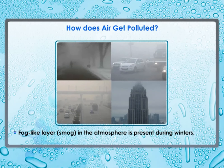A foggy layer in the atmosphere is present during winters. This is smog, which is made up of smoke and fog. Smoke may contain oxides of nitrogen which combine with other air pollutants and fog to form smog. Smog causes breathing difficulties such as asthma, cough, and wheezing in children.